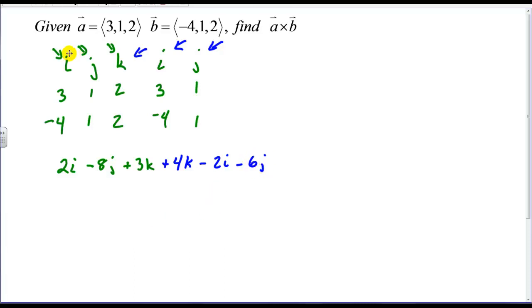So now I add like terms. I notice I have an i here and an i here, they're opposite, so I get 0i. My j is here and here, which gives me a negative 14j. And my k is here and here, which gives me a positive 7k.